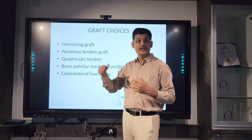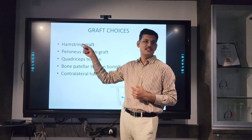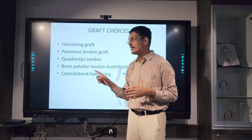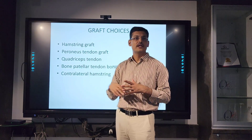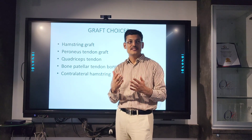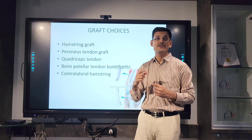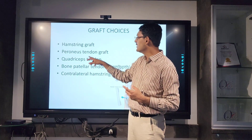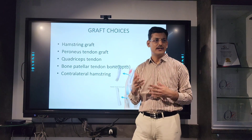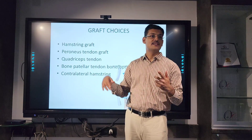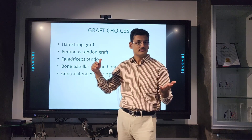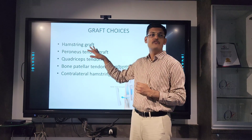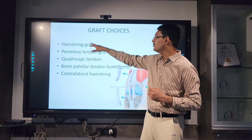Peroneus is now upcoming and in a beginner's hands it is very good because technically it is easier to harvest than hamstring. The dissection is easier, it is palpable, you can nick over the area and take the graft. However, the negative is that you need to take consent from the patient because you are taking a graft from the ankle — an extra site. Some patients may object that their problem is in the knee but you are operating on their ankle. If you use a graft from the other side like the other knee or ankle, you need a special consent.